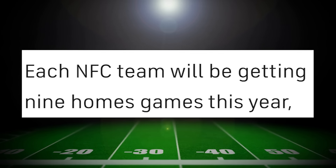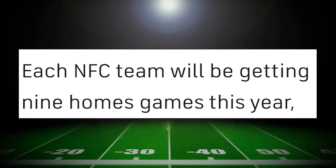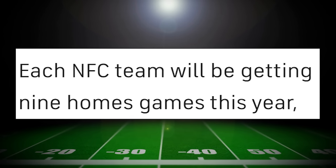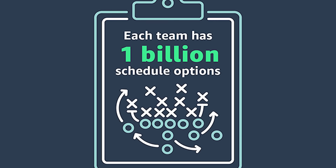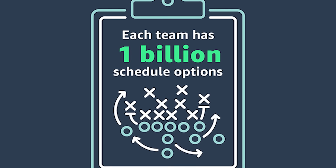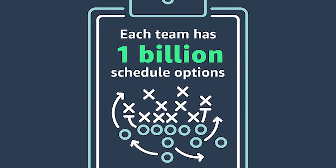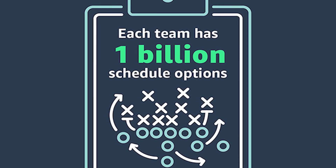Everything from home and away has been perfectly balanced up until that last game. Back when there were 16 games, you had eight home games and eight away games. Now with 17 games, they try to keep it balanced by alternating every year — so last year the AFC had nine home games, and this year the NFC will have nine games at home.